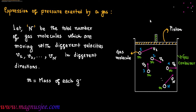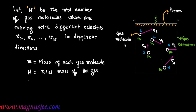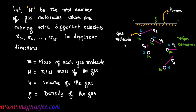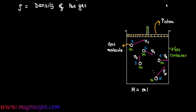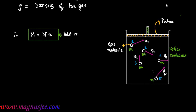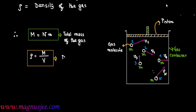Small m is the mass of each gas molecule. Capital M is the total mass of n number of gas molecules, or simply the total mass of the gas. V is the total volume of the gas, and rho is the density of the gas. Therefore, capital M equals n times small m (total number of molecules times mass of each molecule), and rho equals M divided by V (total mass divided by volume of the gas).